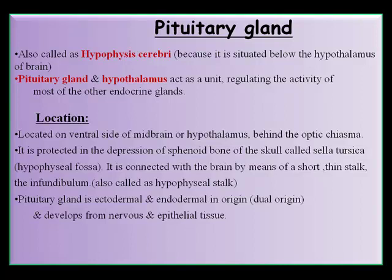The pituitary gland is also called hypophysis cerebri because it is situated below the hypothalamus of the brain. The pituitary gland and hypothalamus act as a unit regulating the activity of most other endocrine glands. It is located on the ventral side of the midbrain or hypothalamus, behind the optic chiasma, and is protected in the depression of the sphenoid bone called the sella turcica (hypophysial fossa). It is connected to the brain by a short thin stalk called the infundibulum.